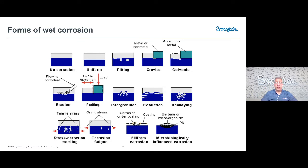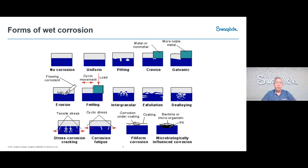This slide summarizes the different forms of corrosion that occur with various materials. Uniform corrosion occurs over a large surface area, very similar to rusting of steel car bodies and iron-carbon materials. There are other examples on this page, many of which impact the applications of our components, and I'll walk through them in the next few slides.